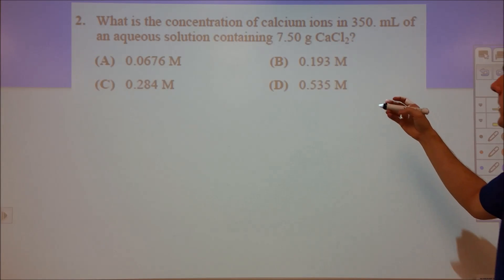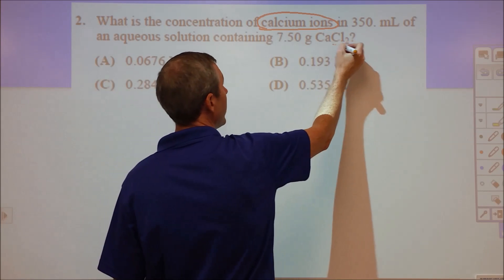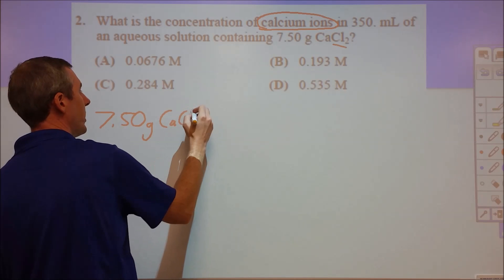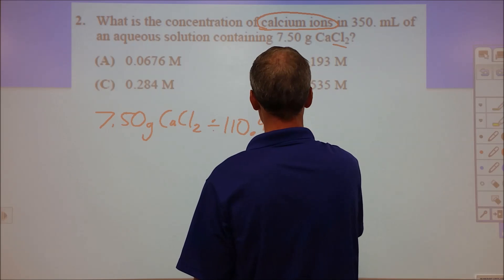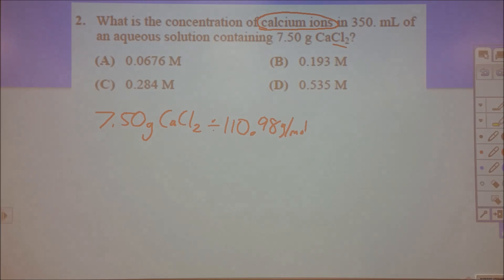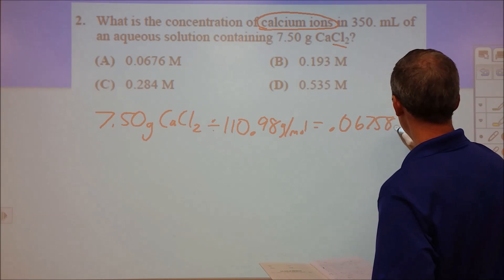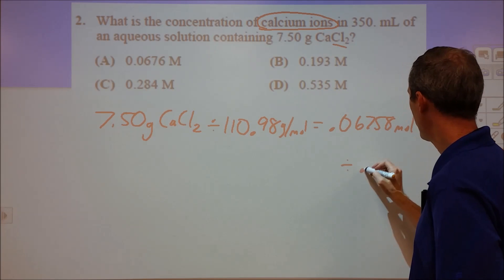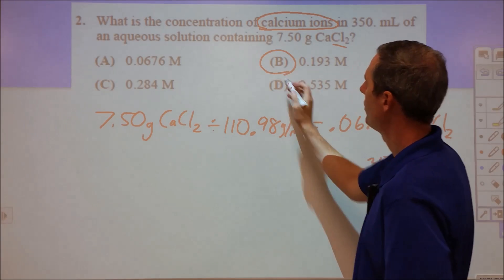Number two is also pretty simple. A key phrase is that it says calcium ions, not chloride ions, because chlorides come in two per formula unit. We have 7.50 grams of calcium chloride. Divide by the molar mass, which according to the periodic table is 110.98. That gives us 0.06758 moles of calcium chloride, which is also how many moles of calcium there are. Divide that by 0.350 liters to get the concentration, which is 0.193 molar. The answer is B.